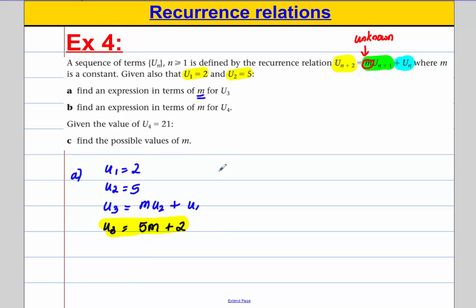Now let's do part b. It says find an expression in terms of m for u4. Well, u4 is equal to m times the one just before it, so m times u3 plus the one 2 before it, which must in this case be u2. So u4 is equal to m, keep that there. Now u3, we've worked that out, it's 5m add 2 plus u2 and u2 is 5, so plus 5.